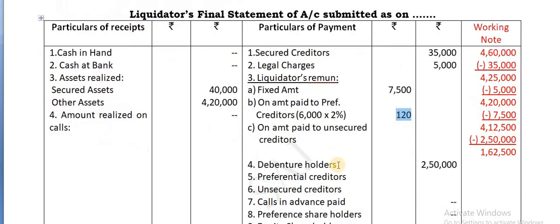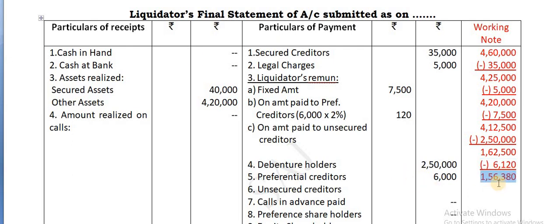At the same time, take the full amount payable to them. The preferential creditor's full amount per call is 6,000. So together this 120 plus 6,000 you can deduct. Now the balance you have is 1,56,380. This is the cash available still.